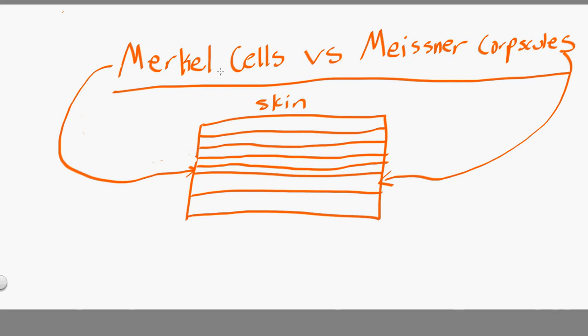Taking a look at the difference between Merkel cells and Meissner corpuscles. These are named after the guys who found them.